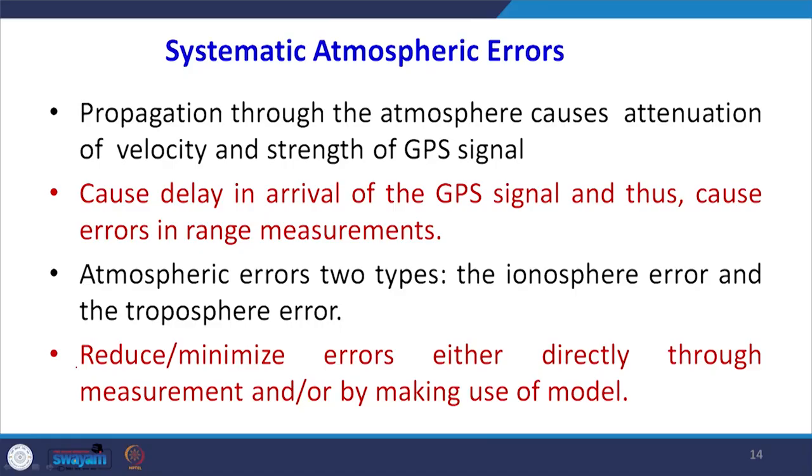Atmospheric error is present in our data sets. Signals propagating from the satellite to the receiver through the atmosphere cause the atmosphere to attenuate the velocity of the signals, causing delay in the arrival of the GPS signal and thus error in the range measurements. This atmospheric error is of 2 types: ionosphere error and troposphere error. We can reduce and minimize these directly through measurements and using available mathematical models.